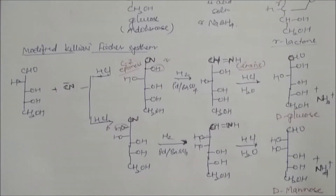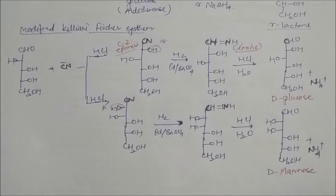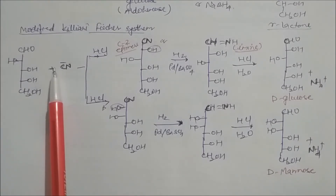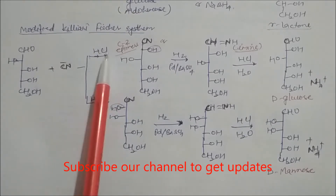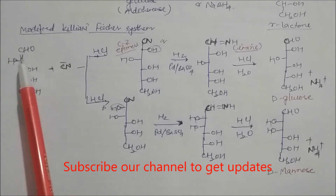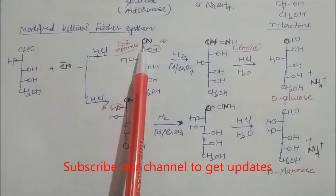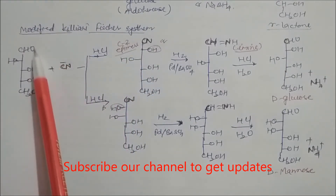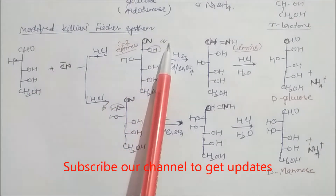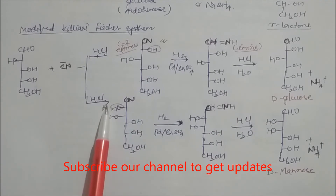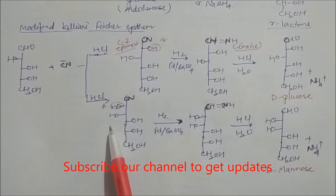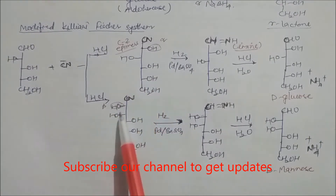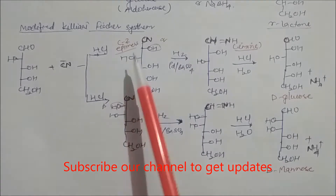Next is the modified Kiliani-Fischer synthesis. Again starting from arabinose, in the presence of HCN in acidic medium, CN attacks the carbonyl carbon to form a cyanohydrin. At this new chiral center, the OH group can be either alpha or beta, giving two C2 epimers — two types of diastereomers. Subsequent reduction with platinum on barium sulfate converts the nitrile to an imine.